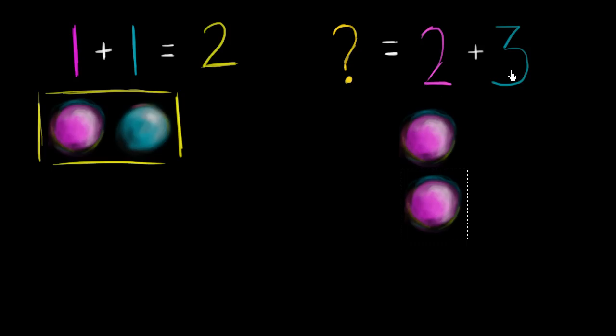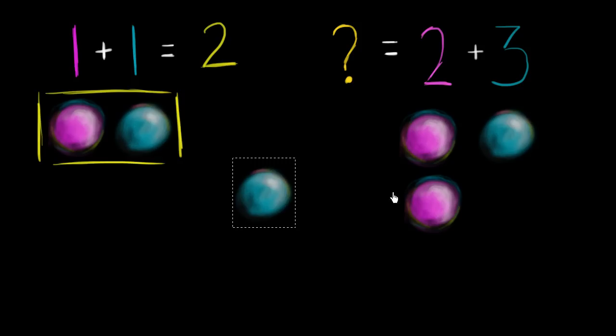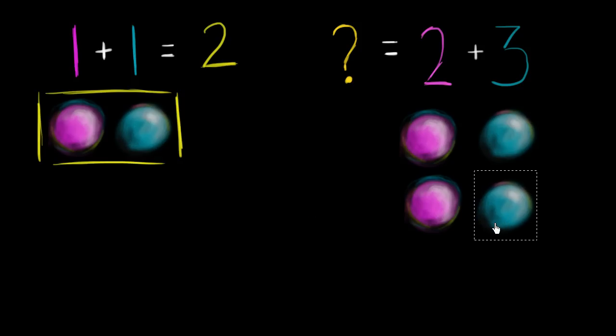And then to that, we're going to add three more circles. And I'll represent those in blue because we wrote the three here in blue. So that is one, two, and three.